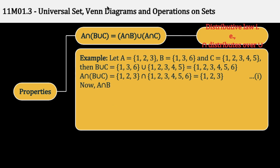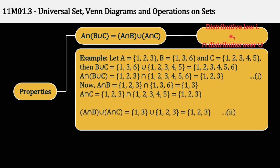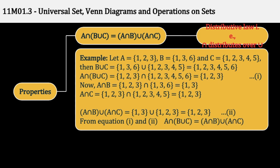अब Right Hand Side निकालता हूँ Equation के. पहले A Intersection B निकालूँगा: {1, 2, 3} Intersection {1, 3, 6}, जो कि है {1, 3}. Then A Intersection C निकालूँगा, जो की आएगा {1, 2, 3}. Now इन दोनों का Union निकालना है to get my answer, तो Union करूँगा तो वो आता है again {1, 2, 3}. यह होगी Equation 2. अब Equation 1 और 2 को compare करके बोल सकते हैं कि दोनों sides same हैं, and hence we have proven the Distributive Law.